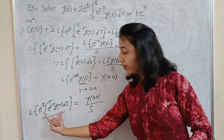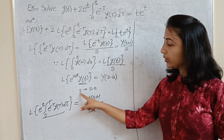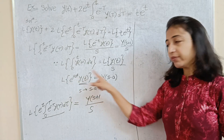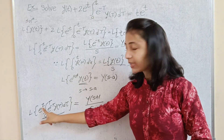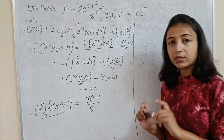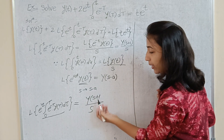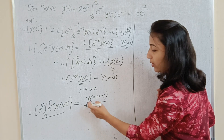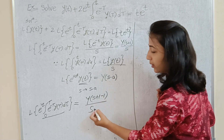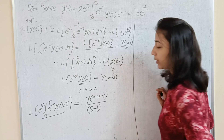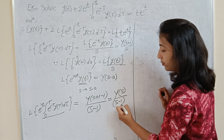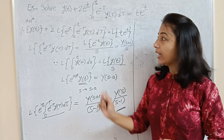Now the middle term also has e^t multiplied by that integral. Applying the shifting law again: the Laplace of the integral term is Y(s+1)/s. Because of the outer e^t multiplication, we replace s with s minus 1. So s+1 becomes (s+1)−1 = s, and dividing by s gives Y(s)/s. Thus the Laplace of e^t times the integral from 0 to t of e^(−T)·y(T) dT equals Y(s)/(s−1).